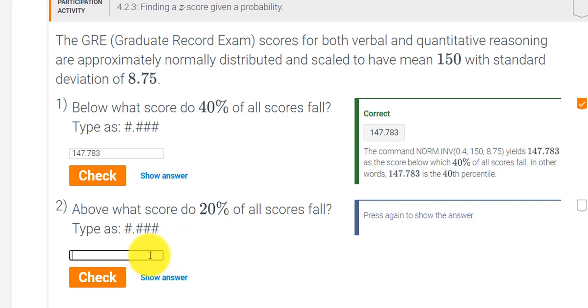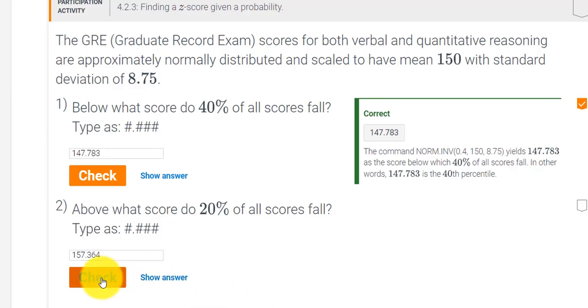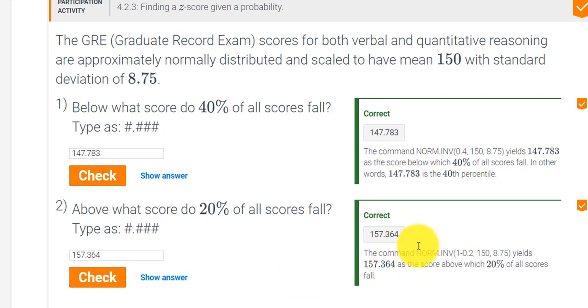I get 157.364. So let's put that in 157.364. Just double check. 157.364. Great. I press check answer, and we got it correct. So notice the difference here.